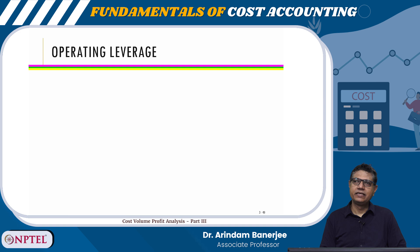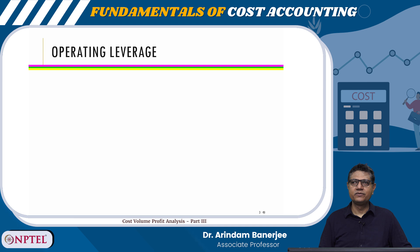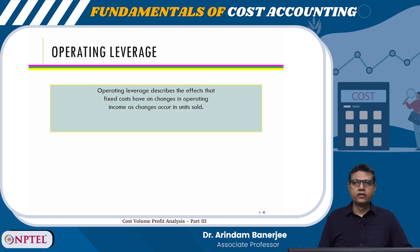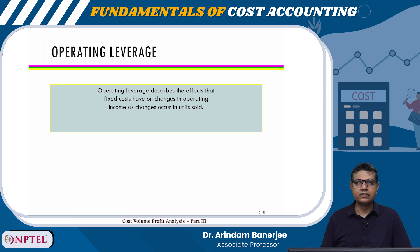Operating leverage is basically a phenomenon in which, due to the presence of fixed cost in the cost structure, the return to the capital invested increases or decreases — the changes are disproportionate. The leverage is a word which came from the word lever. Operating leverage describes the effects that fixed costs have on changes in operating income as changes occur in units sold.